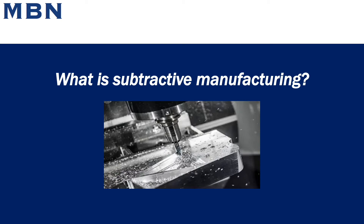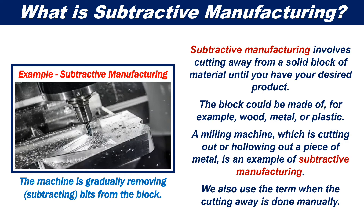What is subtractive manufacturing? Subtractive manufacturing involves cutting away from a solid block of material until you have your desired product. The block could be made of wood, metal, or plastic, for example. A milling machine, which is cutting out or hollowing out a piece of metal, is an example of subtractive manufacturing.